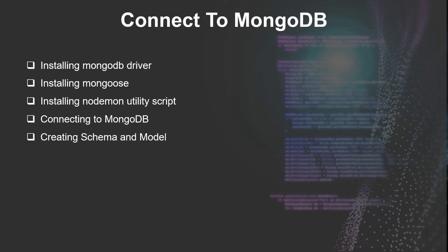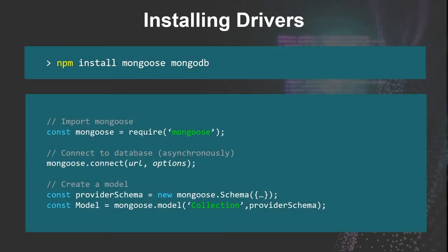We'll also install another program called Nodemon for monitoring changes in our code so we don't have to restart our server each time. Here is how you can install the drivers — very simple. Once we install that, we can go into the code and import it, create a connection, and create models and schemas for our program. So let's go ahead and do that right now.